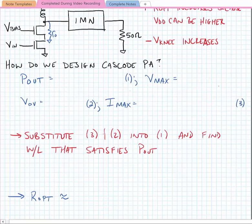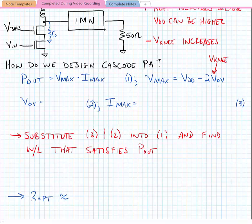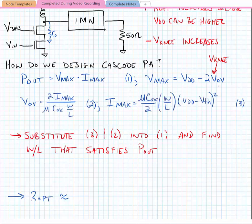How do we design the cascode PA? Let's start from our fundamental equations for output power. Our saturated output power is more or less given by our maximum voltage swing times our maximum current. Our maximum voltage swing is given by the supply voltage minus two times the overdrive voltage. This value here is our knee voltage, two times V_ov. We can find V_ov and I_max from our fundamental equations for a MOS transistor. Our maximum current is given by μC_ox over 2 times W over L times (V_DD minus V_th) squared, and we can find our overdrive voltage as 2I_max divided by μC_ox times W over L.